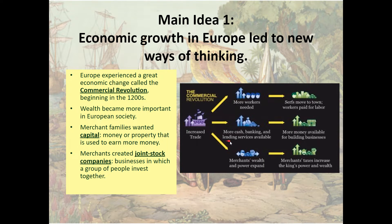Because more money was in circulation and trade increased, merchants became richer and their power began to expand. They had greater influence. Because merchants were getting wealthier, they were being taxed by whatever royal house they owed their loyalty to. These tax increases increased the king's power and wealth and made countries stronger.